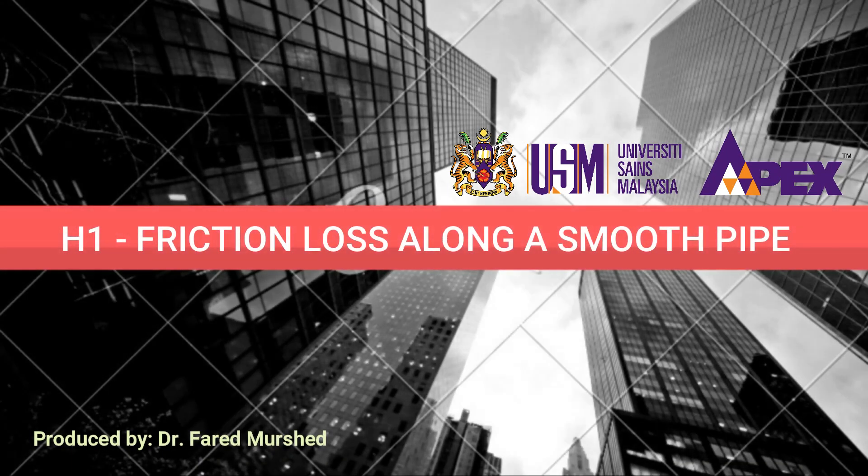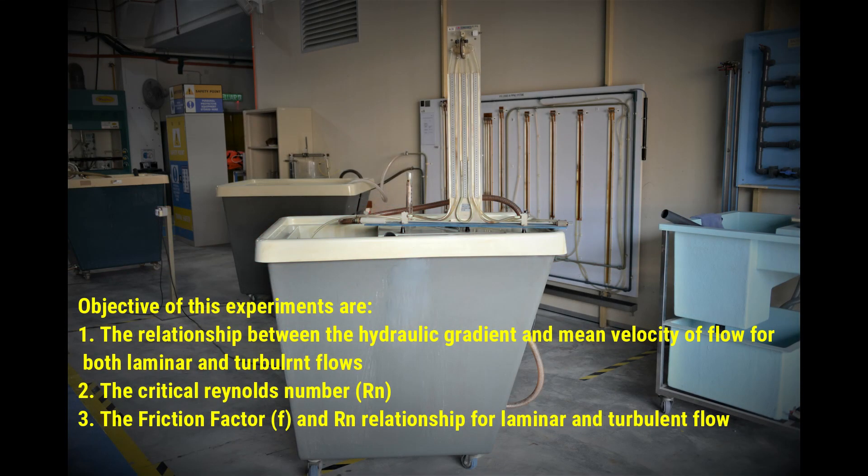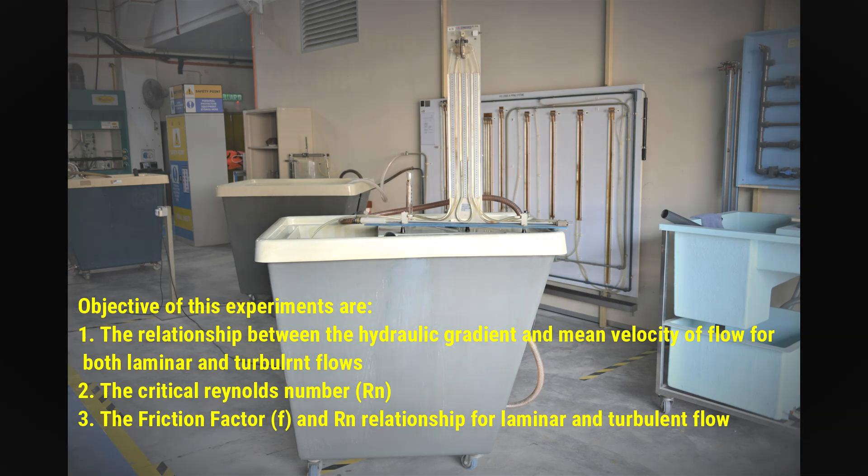In this experiment, the relationship between the hydraulic gradient and mean velocity of flow for both laminar and turbulent flows will be determined. At the same time, critical Reynolds number will be identified and the relationship between friction factor and Reynolds number for both laminar and turbulent flow will be calculated.